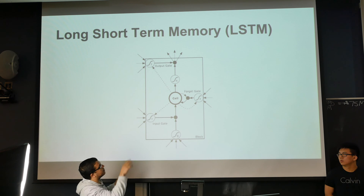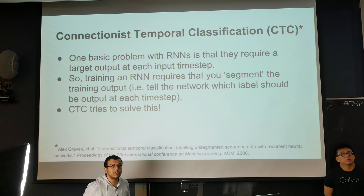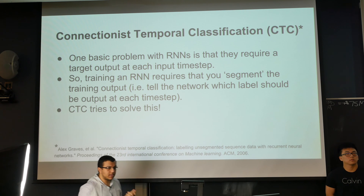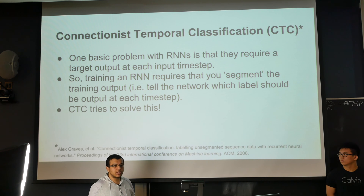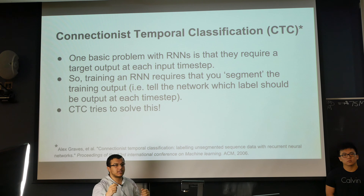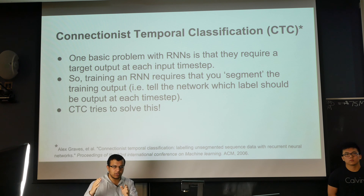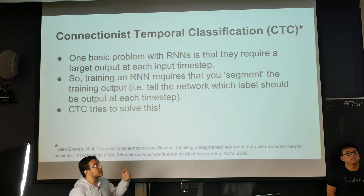The basic problem with training an RNN is that you need to tell it what it should output at every time step. If the input is a sequence of 100 speech frames, you should tell it what to output in every single frame. So if you have 100 speech frames and the output is just 'hello', you need to tell the network when it should output H, when E, when L, and so forth. This makes it hard to directly apply to sequence labeling tasks.